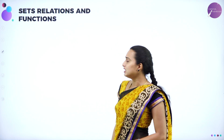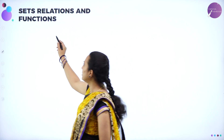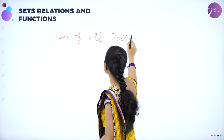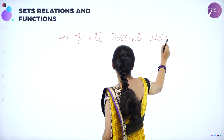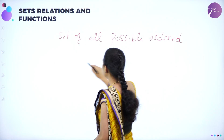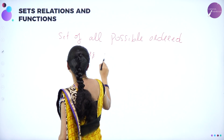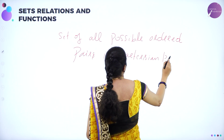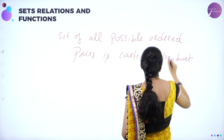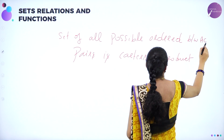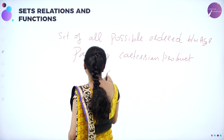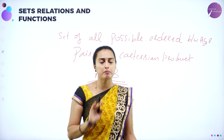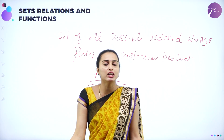What do we mean by Cartesian product? Cartesian product is nothing but the set of all possible ordered pairs. Ordered pairs between A and B form the Cartesian product, denoted by A cross B. The number of elements of A multiplied by the number of elements of B gives you that many ordered pairs. That is what is known as the Cartesian product.